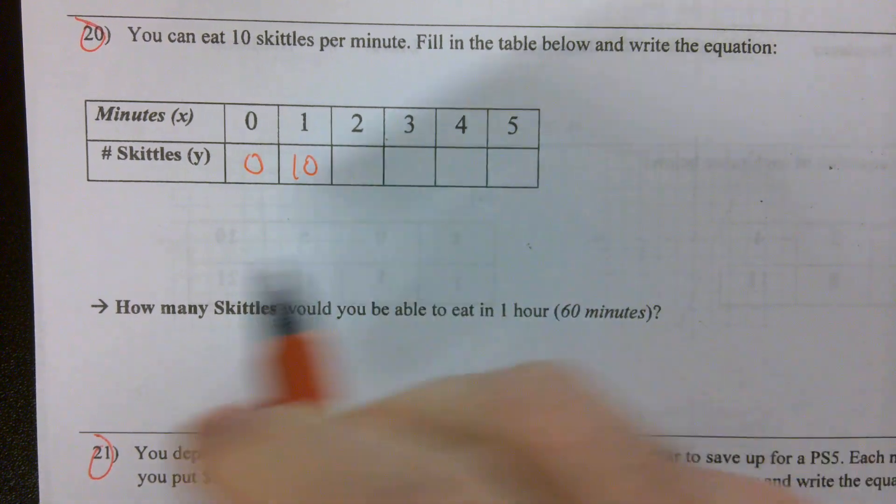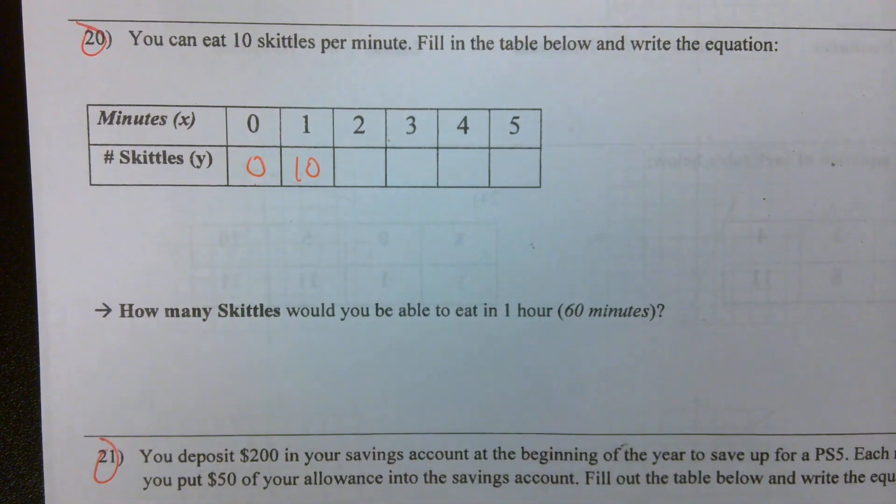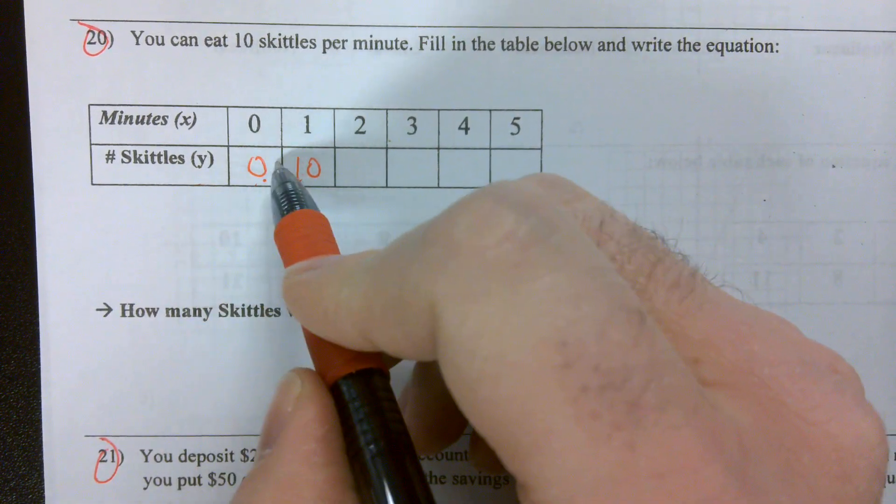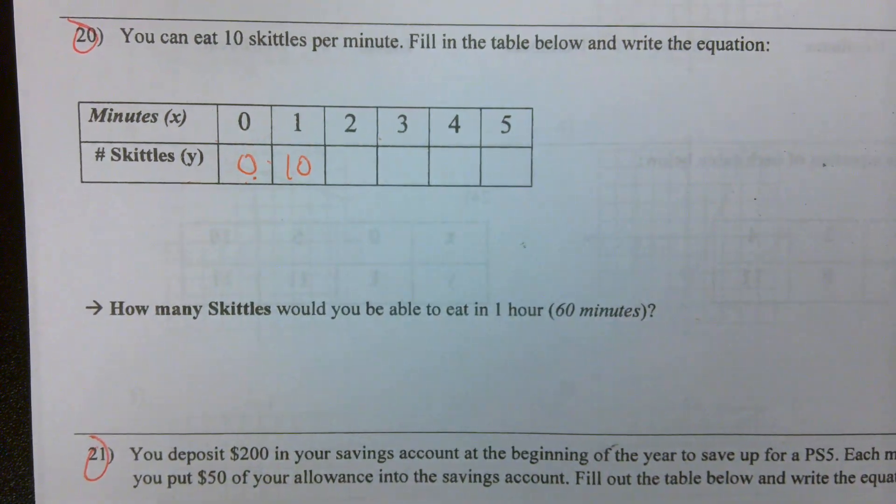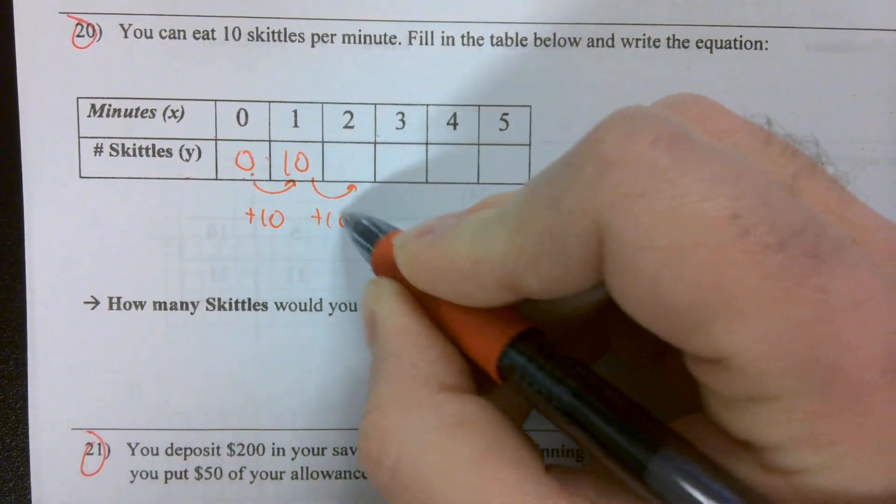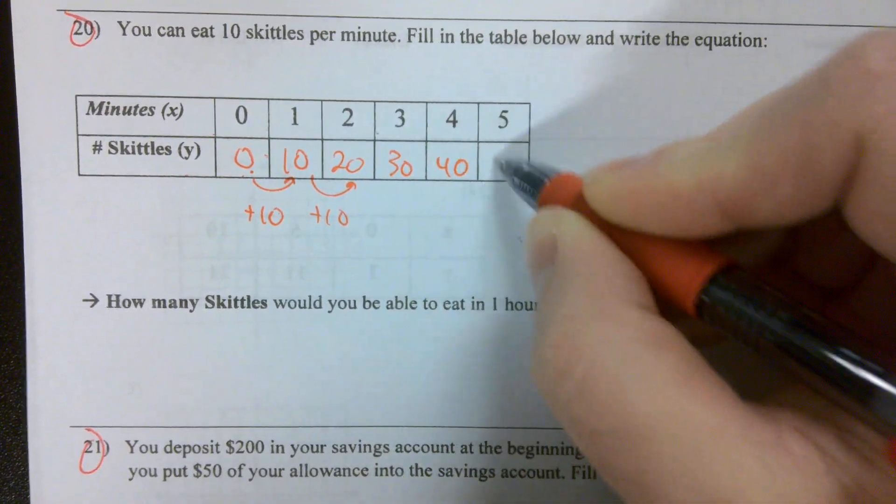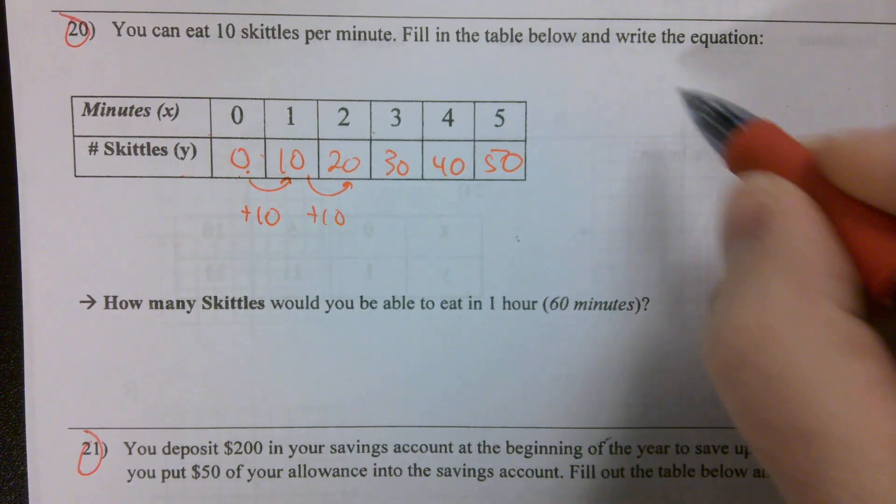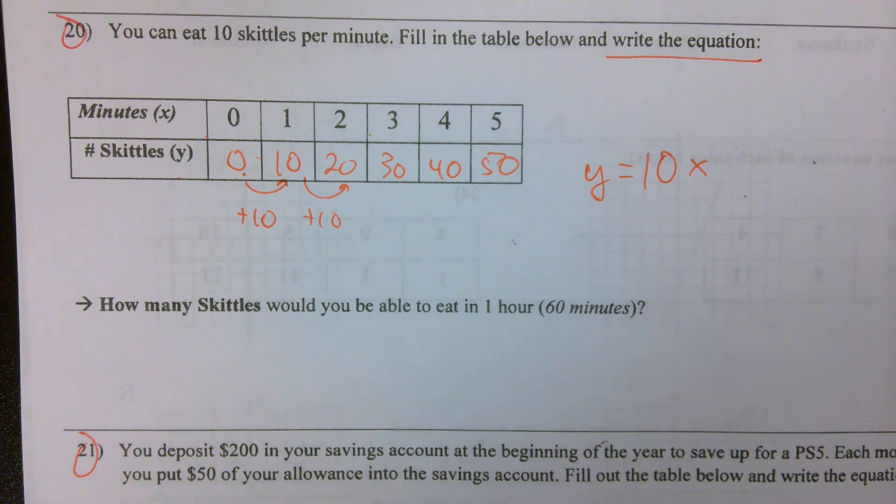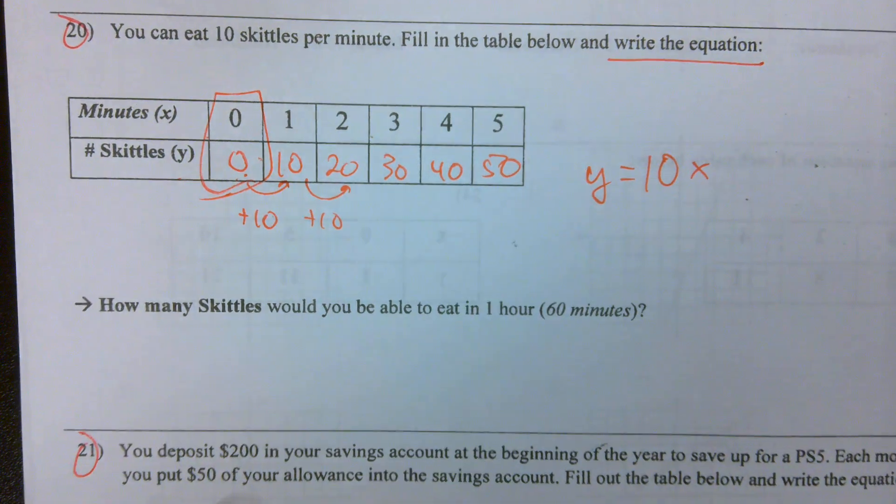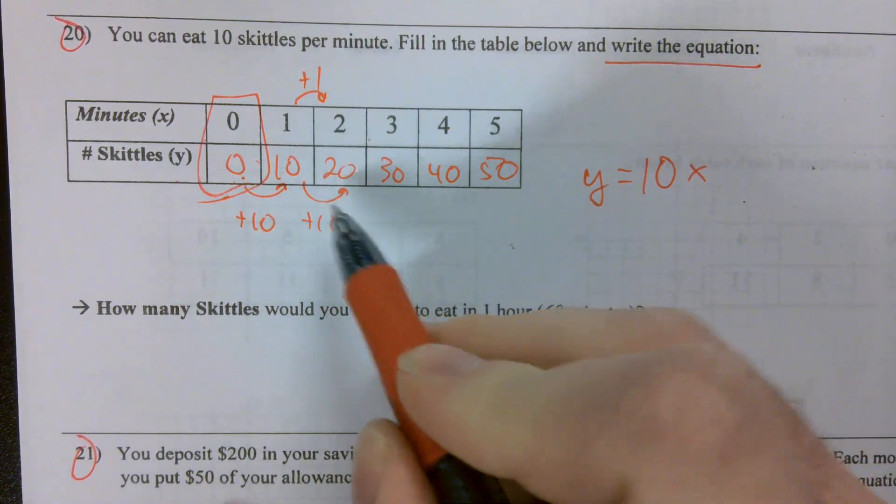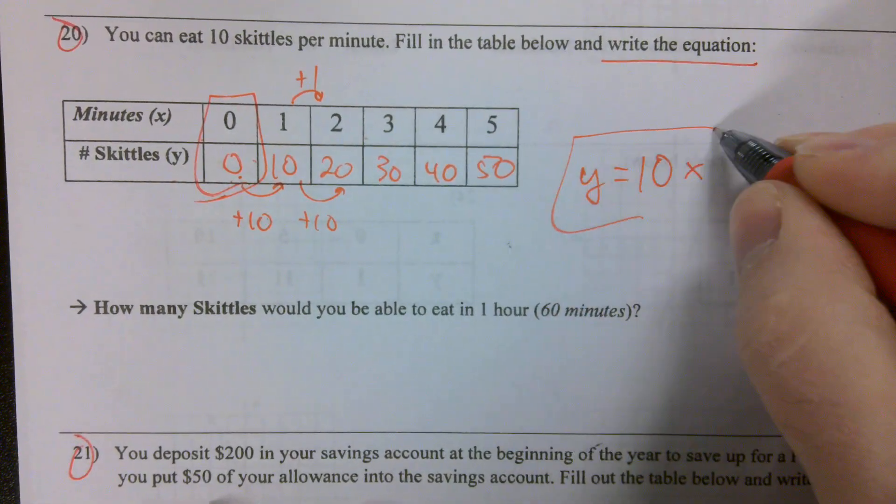We see that every minute we're adding 10. So we can follow that pattern to get 20, 30, 40, 50. If we write the equation, Y is equal to 10X. Don't need a B value because my B value is zero. My change in X on top is plus one, so 10 over one. There's my equation.